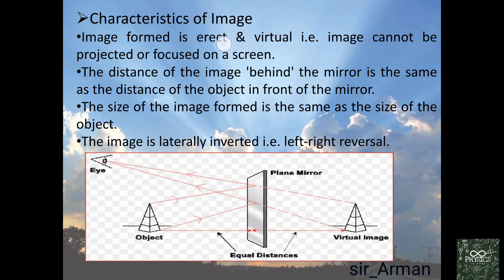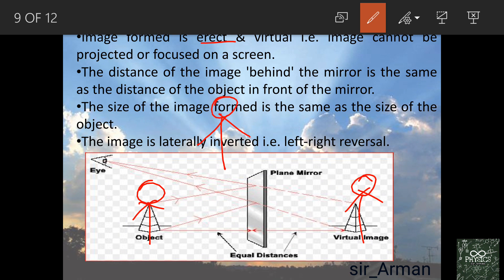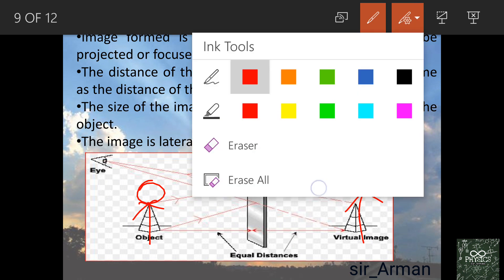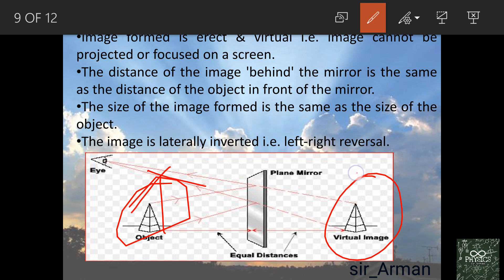The image formed by a plane mirror is erect. If you are standing with your head up, in the mirror your head is also up. That kind of image is called an erect image. If the head appears upside down, it would be called an inverted image. In a plane mirror the image is erect — upright, not upside down.